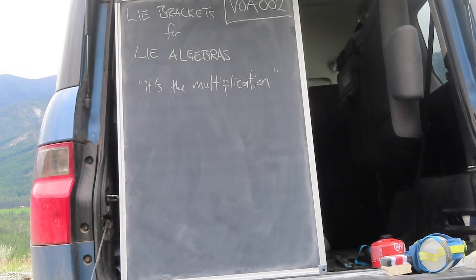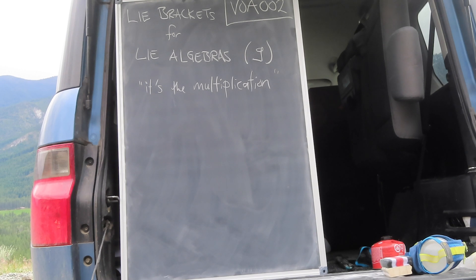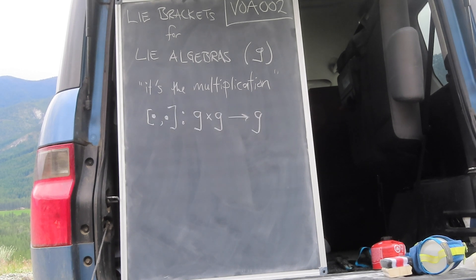We begin with the brackets that define the algebras. To that end, let's begin with the vector space G. I'll typically refer to Lie algebras as G, and following tradition, I'm trying my best here to write it as a lower case fraktur G. On G, let's define the Lie bracket. The Lie bracket is a sort of multiplication — it's a bilinear map from G to itself that satisfies two conditions.